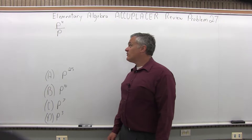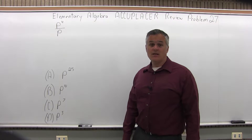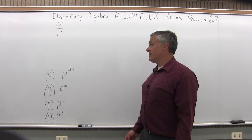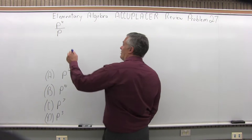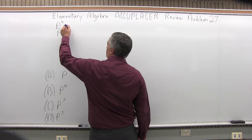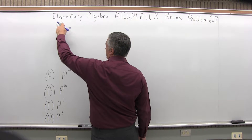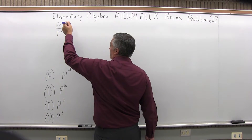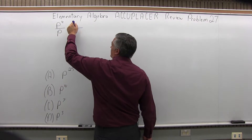We have p to the fourth divided by p, and we want to simplify that and see what type of answer we get. Typically, what you want to do when you have the same base or same variable, you want to subtract the exponents.